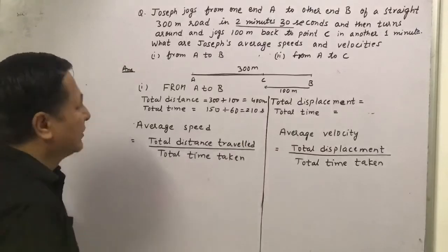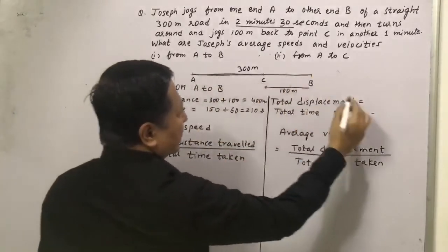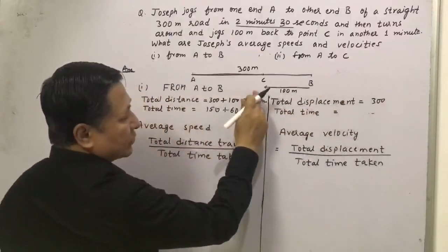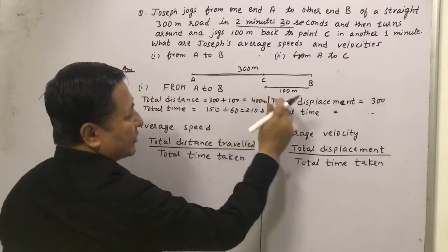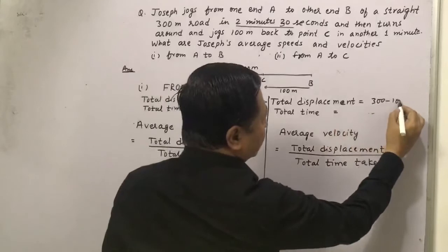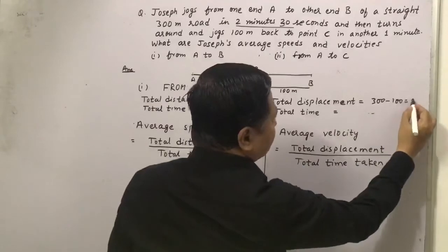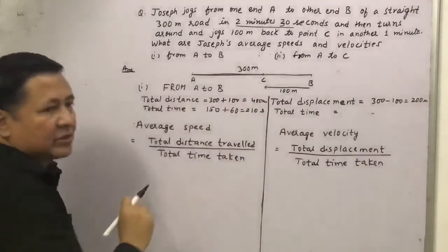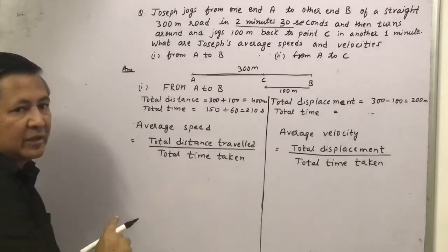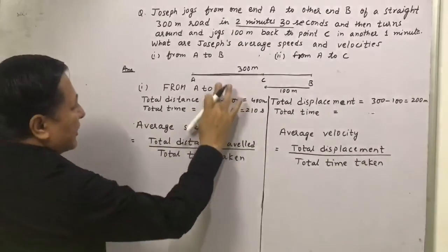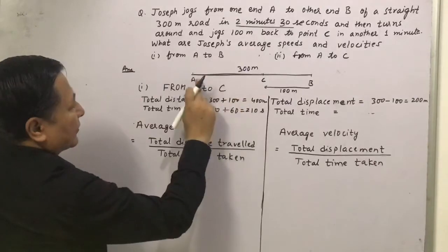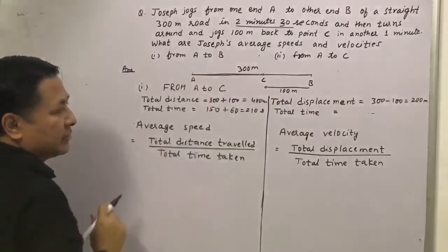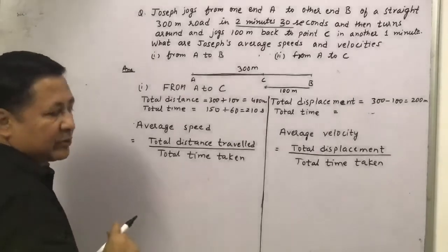Now for displacement: from A to B it is 300m, and when coming back it is 100m in the opposite direction, so that is minus 100m. The displacement becomes 200m. As you know, displacement is the shortest distance between the initial and the final position. From A to C, the shortest distance is 200m — that is the displacement.